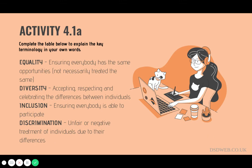Discrimination refers to treating individuals unfairly or less favourably because they belong to a certain group or have certain characteristics. This could manifest through prejudice — for example, someone who has been brought up to believe that foreigners are inferior. Through stereotyping — for example, someone believing that all men are good at DIY. And labelling — for example, using the word 'slow' to describe someone with a learning disability.